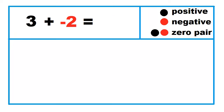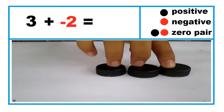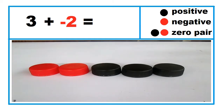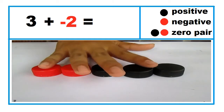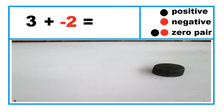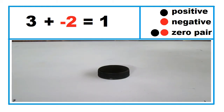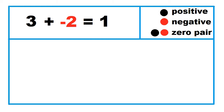Another example: 3 plus negative 2. Three black caps plus 2 red caps — take away 2 zero pairs. 3 plus negative 2 equals 1.